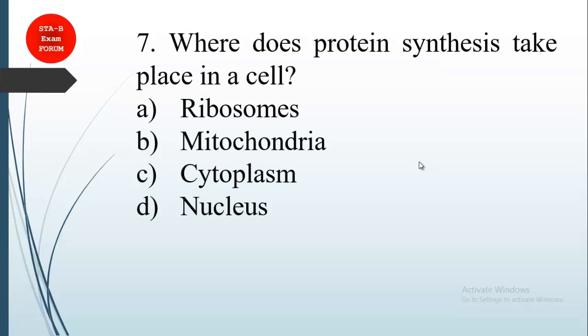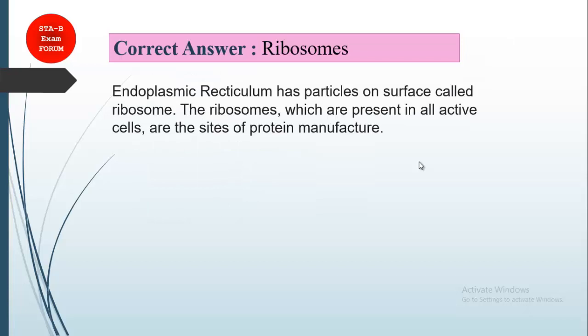Coming to the biology part. Question number 7. Where does protein synthesis take place? Student, this is somewhat dual answer I can say. Both option A and option B are correct. As you know that protein synthesis takes place in endoplasmic reticulum where on the surface of endoplasmic reticulum, ribosomes are present and ribosomes are primarily responsible for protein synthesis. But mitochondria also have ribosome in it. So it also takes part in protein synthesis. But in such case, you should always choose ribosome because ribosome is the primary place where protein synthesis takes place. So this is the correct answer: ribosomes.